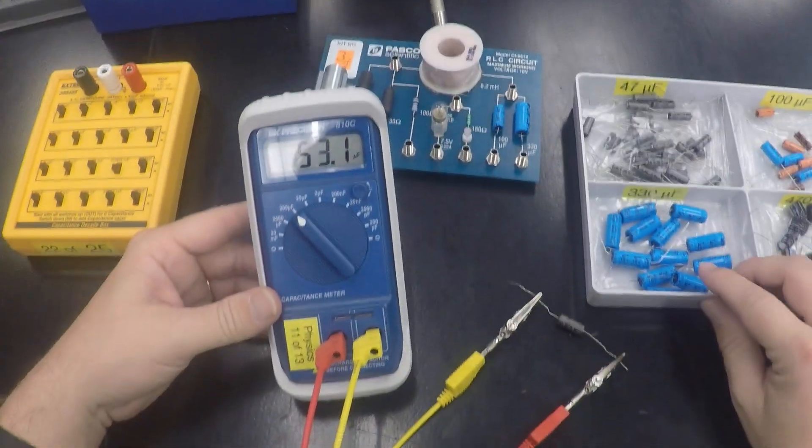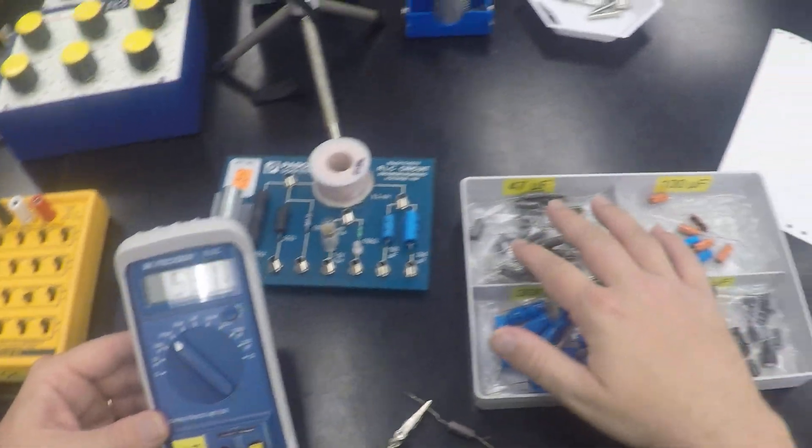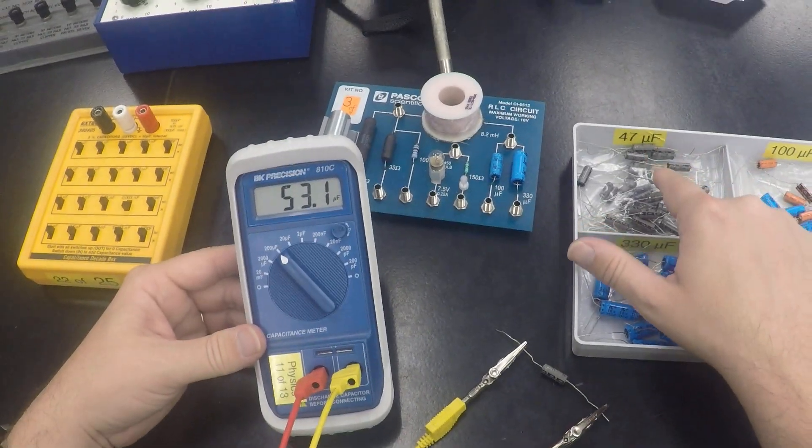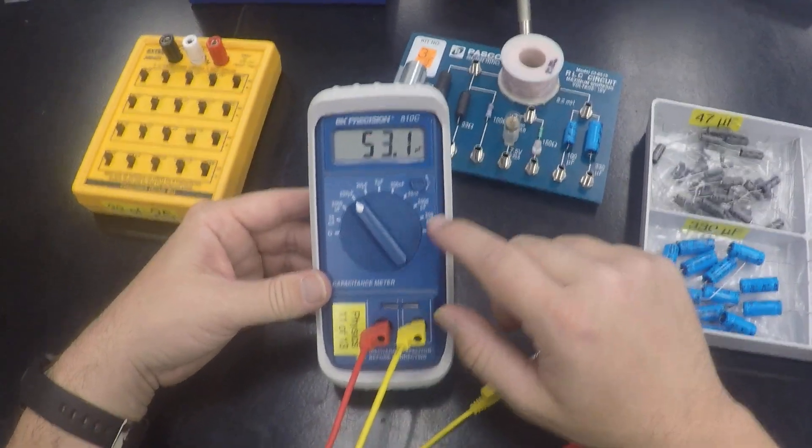You're going to find that capacitors are much harder to, you have to allow for a greater tolerance from the factory than resistors. So you can see that's a good 6 microfarads off from the capacitance meter.